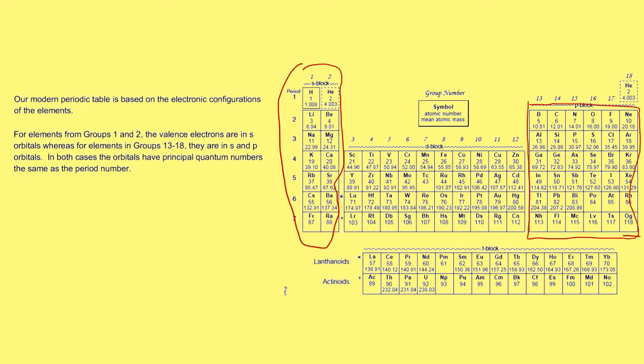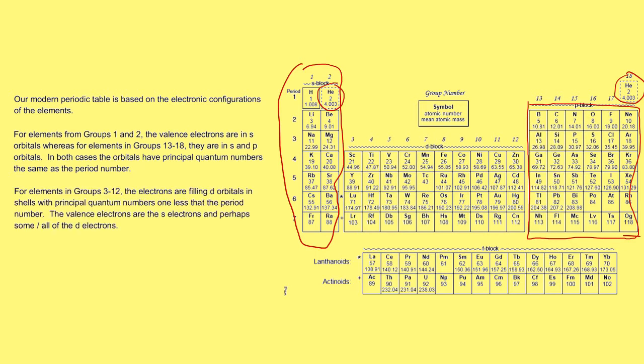Notice that helium is placed either in group 2 or in group 18 — in group 2 because it's filling s orbitals, and in group 18 because it has a full outer shell. Then in groups 3 to 12, you know this as the d block, and the valence electrons are going into the d orbitals.